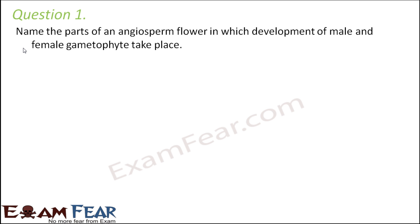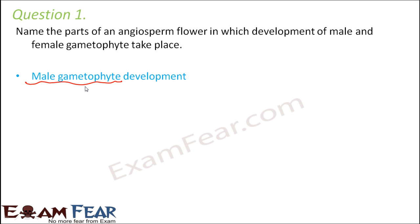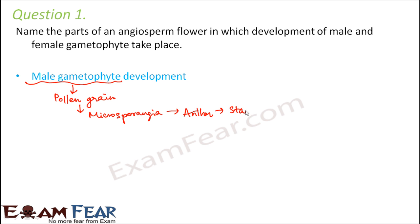Question number 1: Name the parts of an angiosperm flower in which development of male and female gametophytes take place. First, the male gametophyte is the pollen grain. Pollen grain is formed inside the microsporangia, which is located inside the anther. The anther is part of the stamen of the flower, which is part of the androecium. So this is where male gametophyte development takes place.